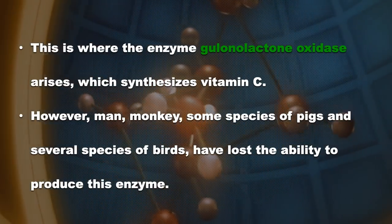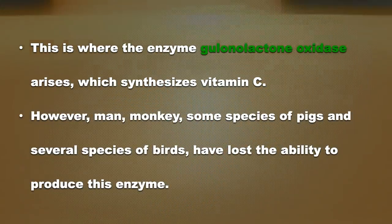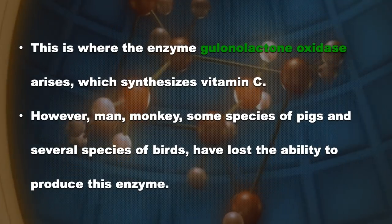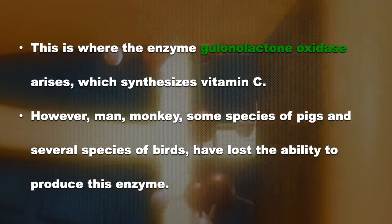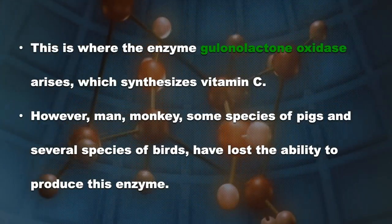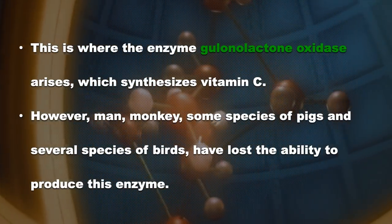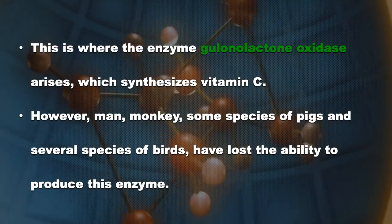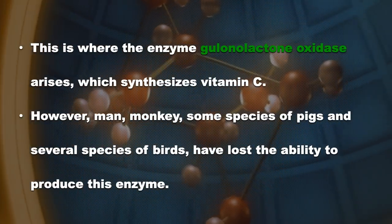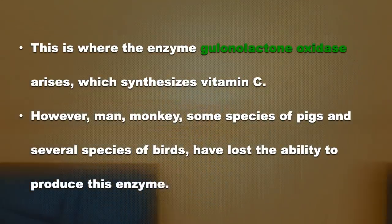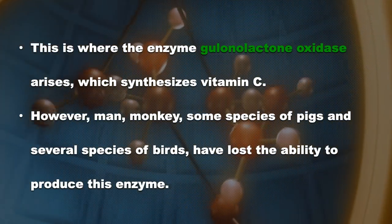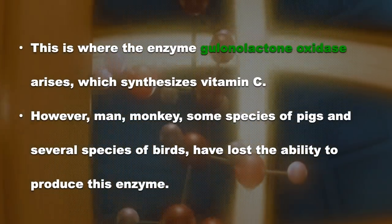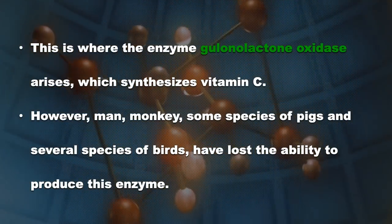This is also very interesting. To synthesize vitamin C, the species or animal requires something called gluconolactone oxidase — it is an enzyme. However, some species on this planet, like humans, monkeys, some pigs, and some birds, have lost the ability to produce this enzyme. So they cannot make vitamin C, and therefore vitamin C has to be supplemented via food.